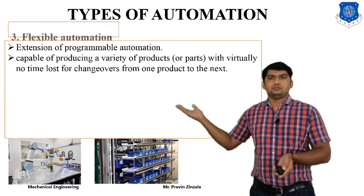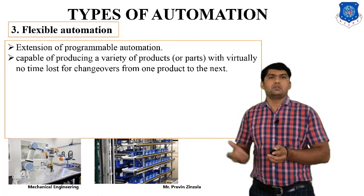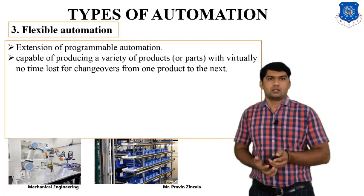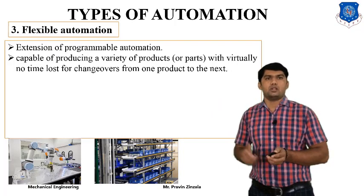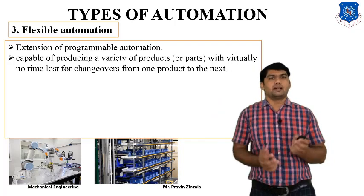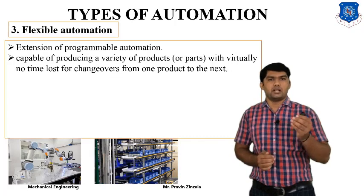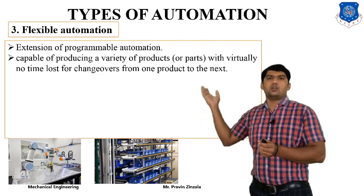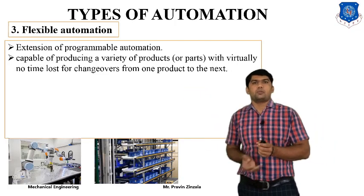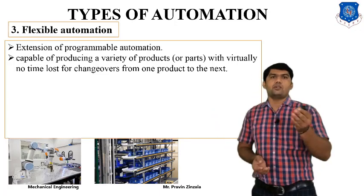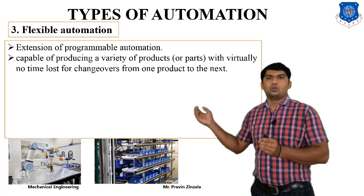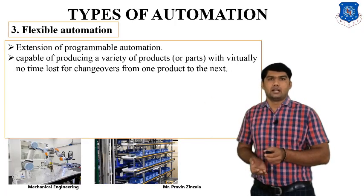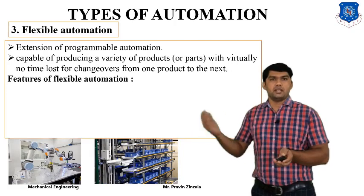The third type is flexible automation, used when a variety of components is required. For example, in rocket production, flexible automation is used because no two components are similar — different times require different components and different production rates. Flexible automation is an extension of programmable automation and is capable of producing a variety of products or parts with virtually no time loss when changing over from one product to the next, making it advantageous over both programmable and fixed automation.